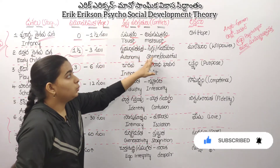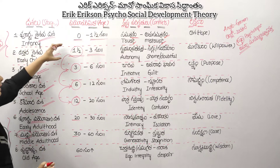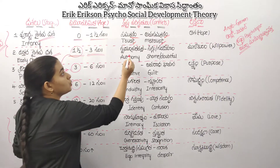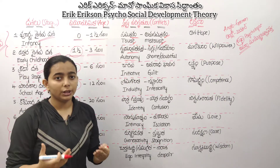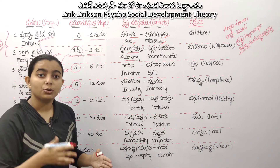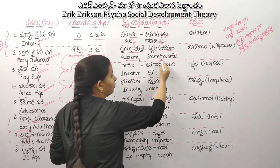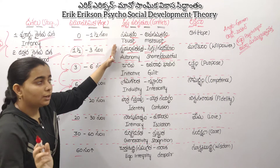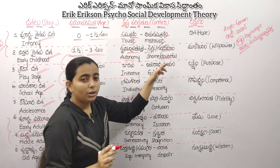Next is Autonomy vs. Shame or Doubt — Swayam Prathipathi vs. Sandeham. If you want to allow the child independence at this age, you can do what you want — Autonomy. If you give the child too little freedom, for example when eating food, they will face shame or doubt.